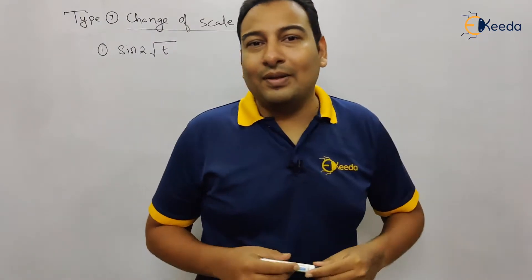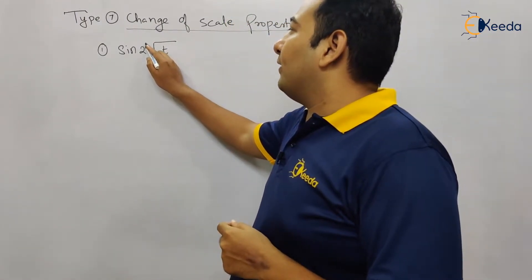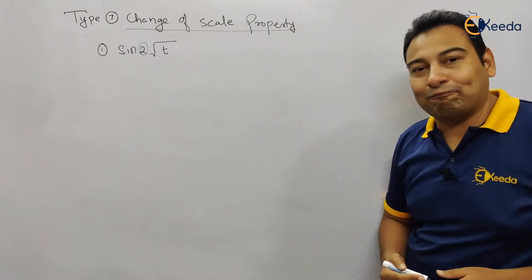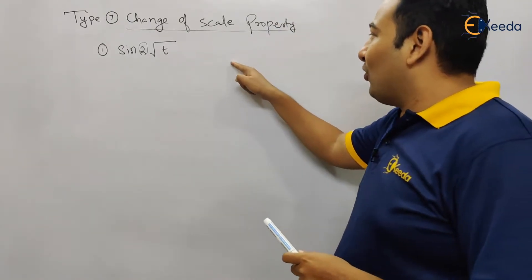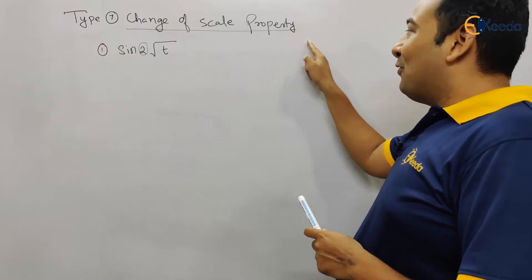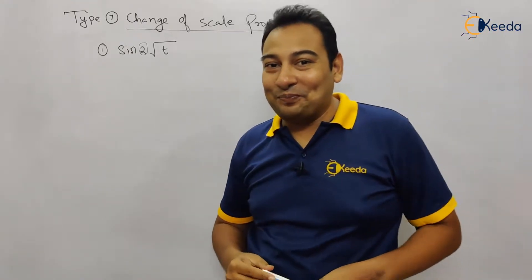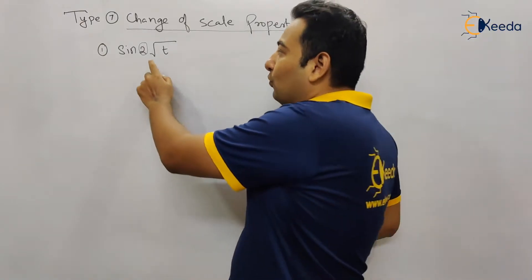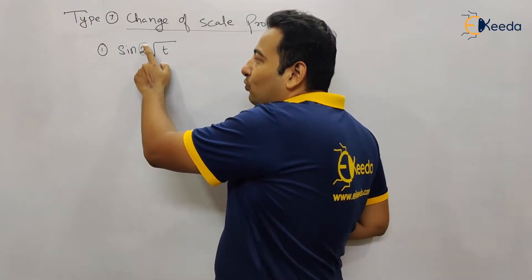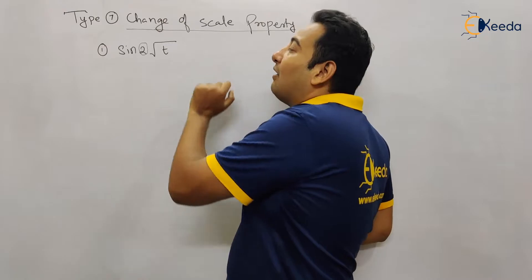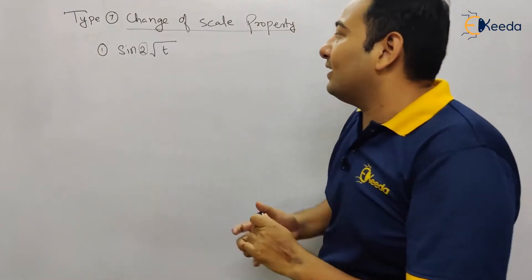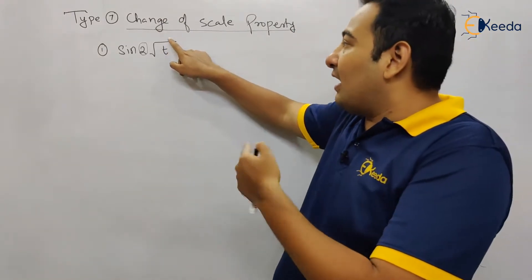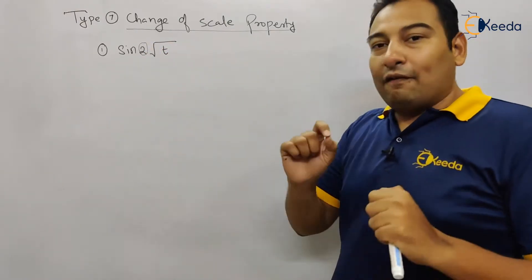If you observe this problem, this is your scaling factor. But remember the important point: the power of 'a' and 't' must be the same. Now observe — the power of 2 here is one, and the power of t is one-half, since it's √t, meaning t to the power half and 2 to the power one.